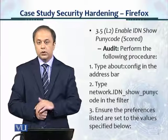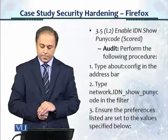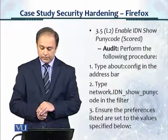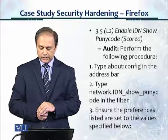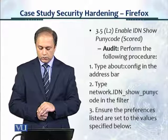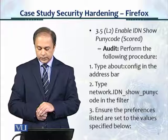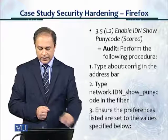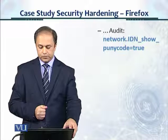This is the audit section. Perform the following procedure: type 'about:config' in the address bar, then type 'network.idn.show_punycode' in the filter. Ensure the preferences listed are set to the values specified. The setting shown in blue is what should be there for punycode.